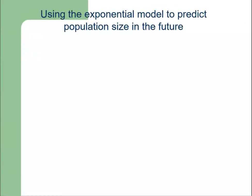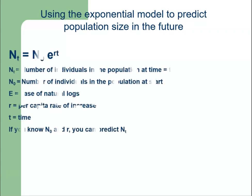Using an exponential model to predict population size in the future, we have the formula: N(t) equals N-naught times e raised to the power r times t. Here, N(t) is the number of individuals at time t, N-naught is the number at the start, e is the base of the natural log, r is the per capita rate of increase, and t is time. If we know N-naught and r, we can predict population at time t.